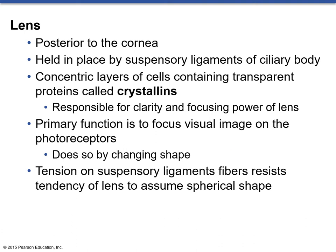The lens is about the size of a warhead candy and about the same texture. It is posterior to the cornea and held in place by suspensory ligaments of the ciliary body. It has transparency and clarity because of transparent proteins called crystallins, which give the lens its clarity and focusing power. The function of the lens is to focus a visual image on the photoreceptors by changing shape. When the suspensory ligaments are engaged and pulling on it, they resist the lens's tendency to assume a spherical shape — naturally at rest, the lens wants to be more spherical. When the suspensory ligaments are pulling on the lens, it becomes flatter.